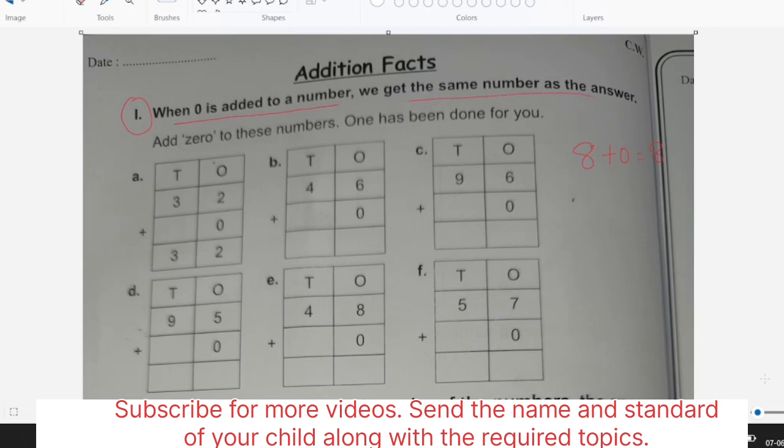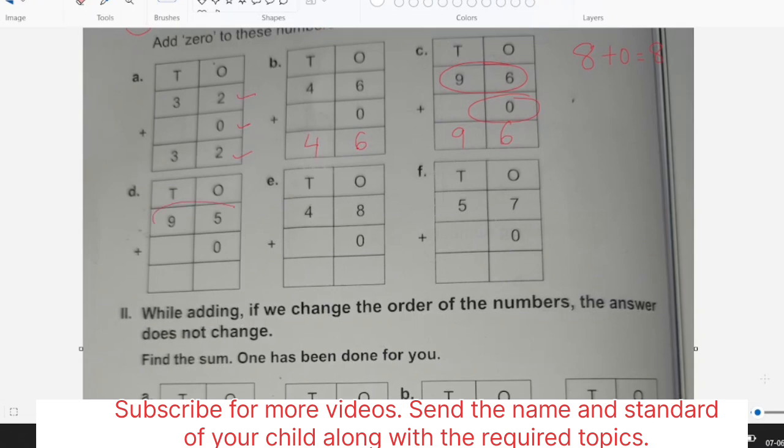We get the same number as the answer and the answer is called as sum. So we will tell them the sum will remain same. That means if we add zero to any number, the answer will be the same, the same number we will get. For example, 32 plus zero is 32. Similarly we will tell the child 46 plus zero is 46.